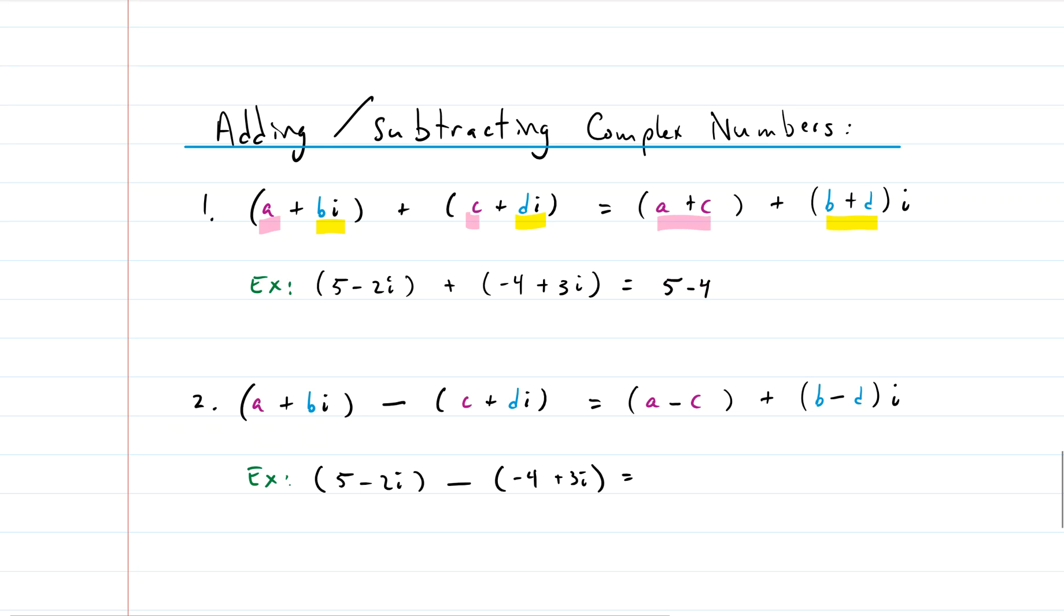So in our example, five minus two i plus negative four plus three i, our two real parts are five and minus four, and the two imaginary parts are negative two i and three i. And that gives us five minus four is one, and negative two i and three i gives us just one i. So there we go, one plus i. There's the answer.